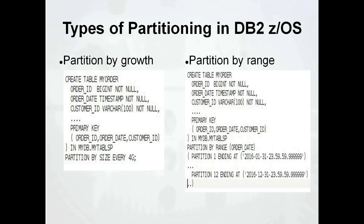In DB2 on z/OS, as of version 10, you have two types of partitioning: partition by growth and range partitioning. Partitioning by growth gives you the ability to partition the table as data grows and is useful where the data is expected to grow beyond the 64 gigabyte table space limit and you have no suitable partitioning key for that table. Range partitioning, however, is the most commonly used table partitioning method, as it gives you more control over how the data is spread across the partitions.